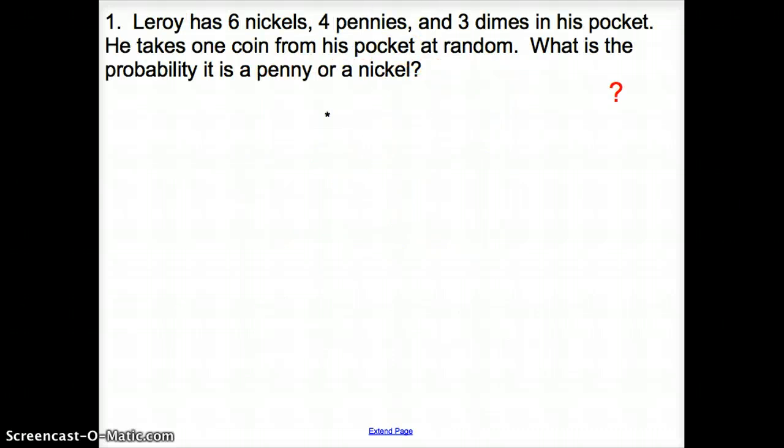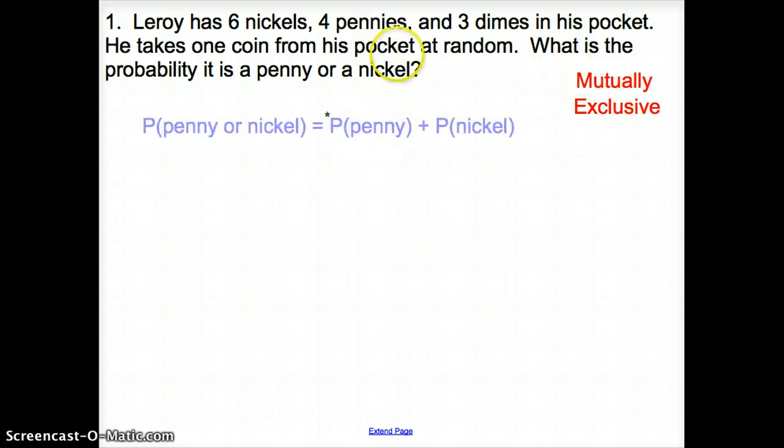So our first example here with number one. Leroy has six nickels, four pennies, and three dimes in his pocket. He takes one coin from his pocket at random. What is a probability that is a penny or a nickel? Well, does the penny or nickel share any common outcomes? No, they're not. Because if it's a penny, it's a penny. And if it's a nickel, it's a nickel. So this is a mutually exclusive event. Now let's go ahead and set it up.